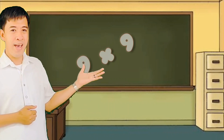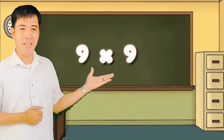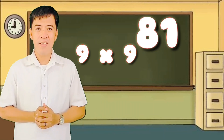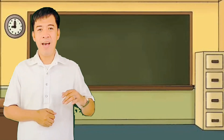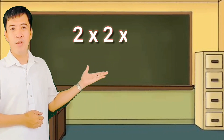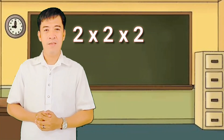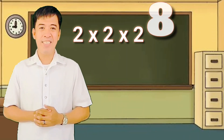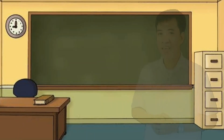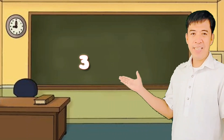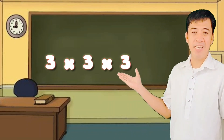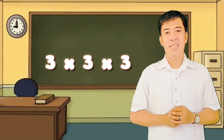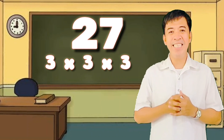Next, we have 9 times 9. Right? 81. Next, we have 2 times 2 times 2. You are correct! The answer is 8. And the last one, we have 3 times 3 times 3. Yes! The answer is 27.